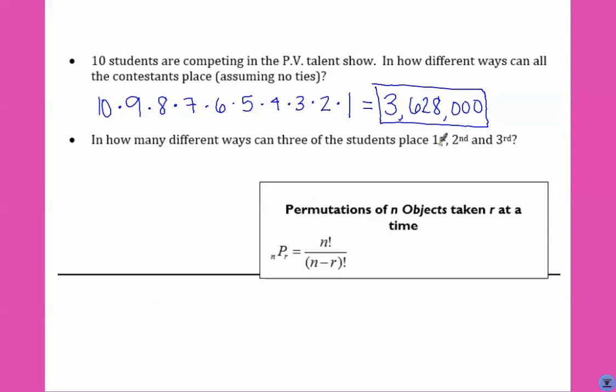Now, what if we were just worried about first, second, and third? We have 10 options for first place, 9 options for second place, and 8 options for third. It's a lot shorter. That gives us 720 options.